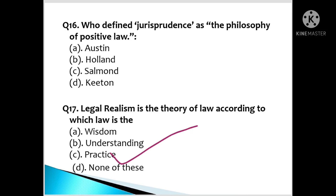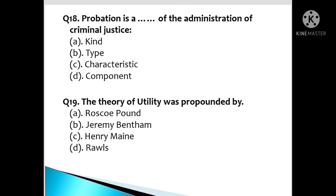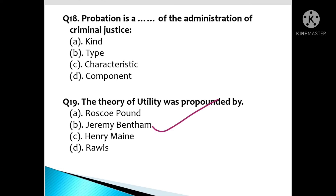Question number 18: Probation is a dash of the administration of criminal justice — is it a type, characteristic, or component? The correct answer: probation is a component of the administration of criminal justice. Question number 19: The theory of utility was propounded by: A. Roscoe Pound, B. Jeremy Bentham, C. Henry Maine, D. Rawls.